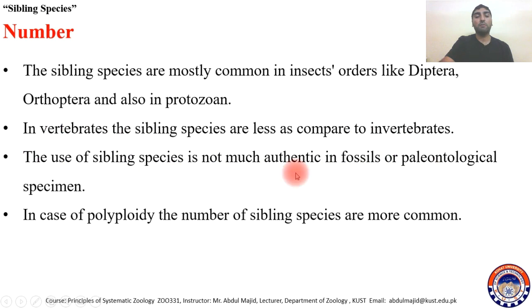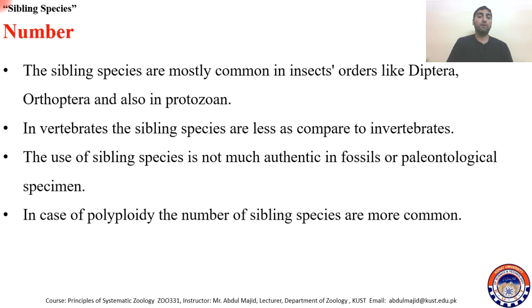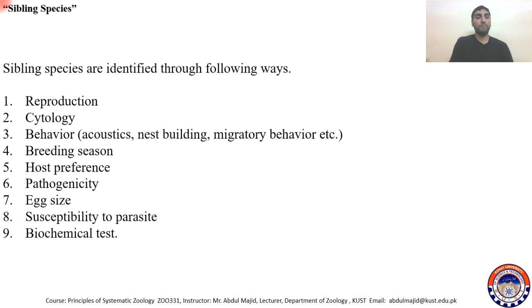The use of the sibling species concept is not very authentic in fossils or paleontological specimens, because you cannot determine reproductive isolation in dead organisms — fossils cannot reproduce. So the sibling species concept cannot be extended to paleontological specimens. In the case of polyploidy, the number of sibling species is more common where there is polyploidy.